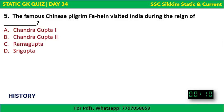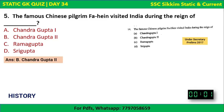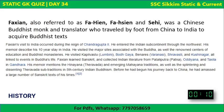Question 5: The famous Chinese pilgrim Fa Xian visited India during the reign of which ruler — Chandragupta I, Chandragupta II, Ramagupta, or Srigupta? The correct answer is Chandragupta II. This question was also asked in Under Secretary Prelims 2017. Fa Xian, also referred to as Fa Hien, was a Chinese Buddhist monk and translator who traveled by foot from China to India to acquire Buddhist texts. He visited during the reign of Chandragupta II, the third ruler of the Gupta dynasty.